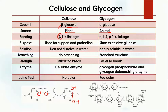In the case of glycogen, we have alpha 1-4 and alpha 1-6 linkages — two types of linkages are present. Alpha means alpha glucose is present. The 1-4 linkage is between carbon one of one glucose and carbon four of another glucose, while the 1-6 linkage is formed between carbon one of one glucose and carbon six of another glucose.